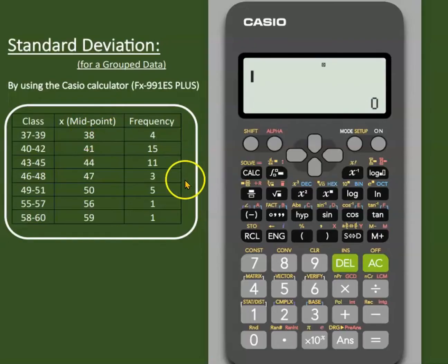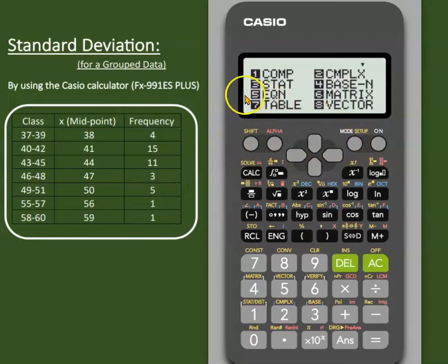This is grouped data which has three columns: classes (maybe class boundaries as well), the second one is about midpoints, and the third is frequency.